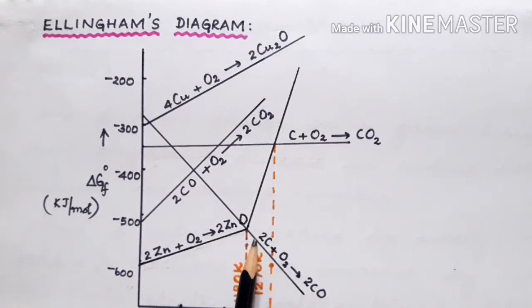As a result, carbon can act as a reducing agent for zinc oxide at a temperature above 1000 to 1070 degrees. So carbon is an effective reducing agent for zinc oxide.